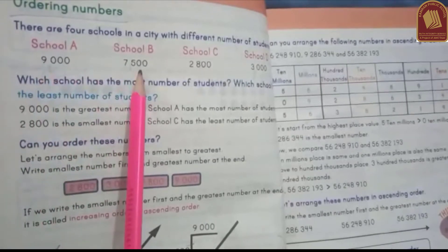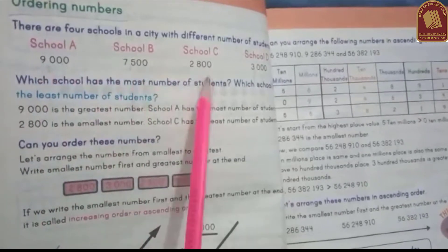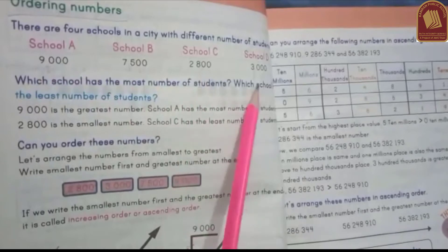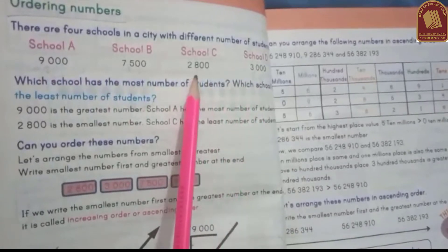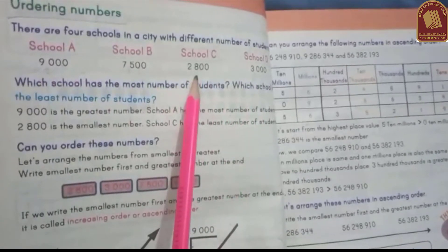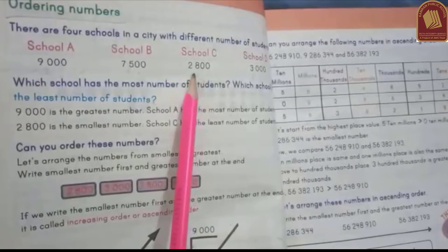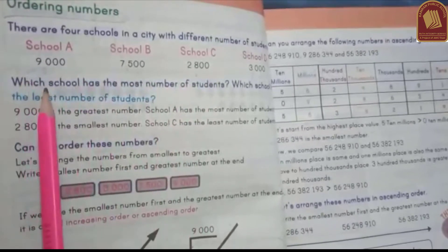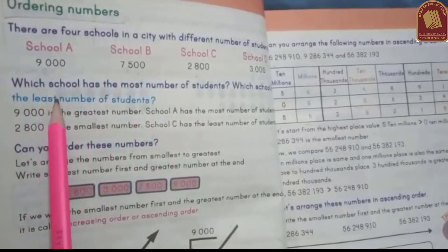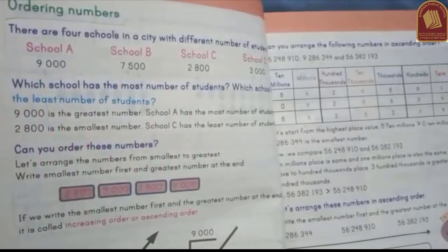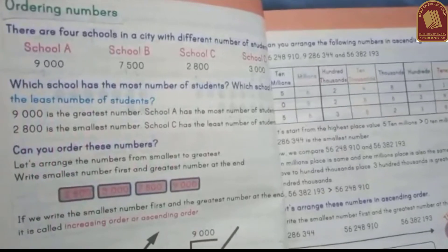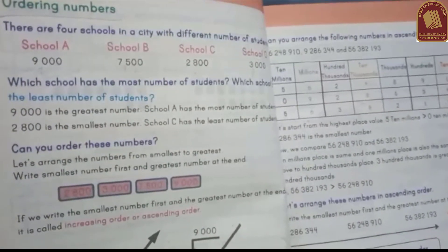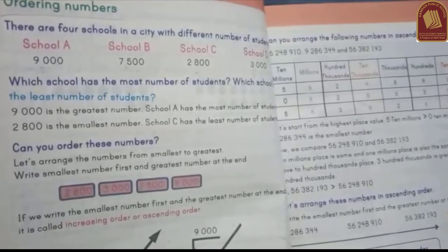इसी को अगर हम descending order में करेंगे तो सबसे पहले हम लेंगे: 9,000 — 7,500 — 3,000 — 2,800। यह हमारा descending order हो जाएगा, यानि हम इसमें greatest to smallest number की तरफ जाते हैं। I hope आपको समझ आ गई होगी। Thank you।